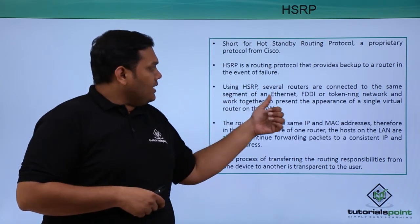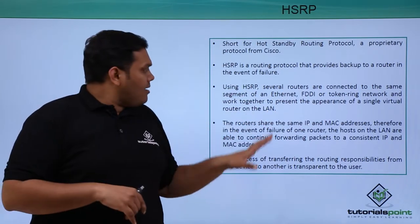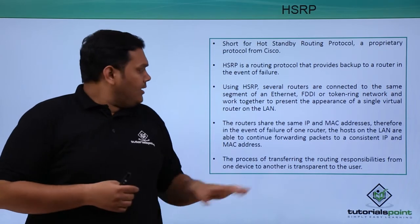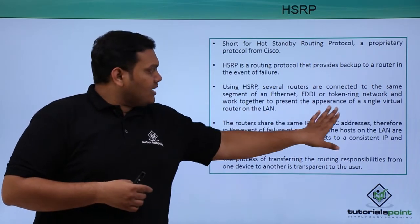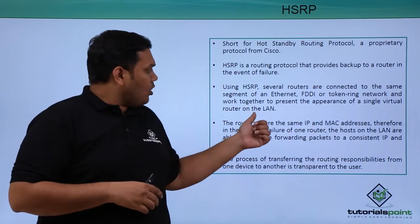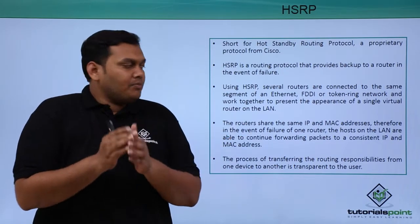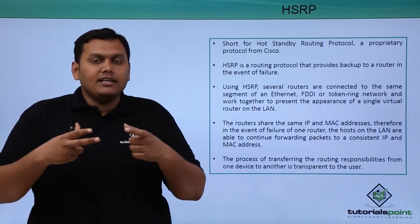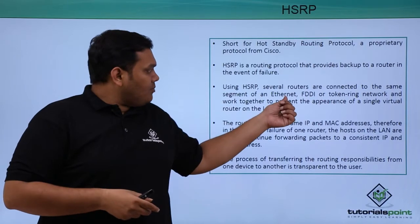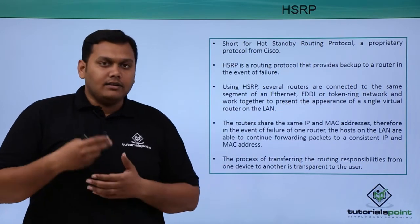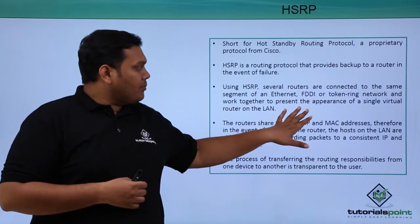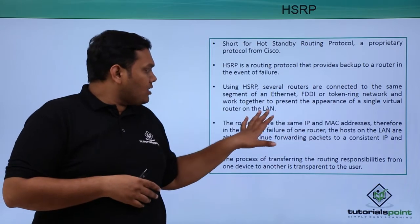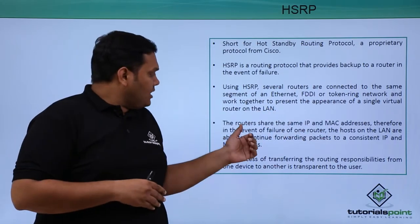Using HSRP, several routers are connected to the same segment of Ethernet, FDDI, or Token Ring network, and they work together to present the appearance of a single virtual router on the LAN. HSRP is used when several routers are connected and form a single virtual router using the same Ethernet, FDDI, or Token Ring network.